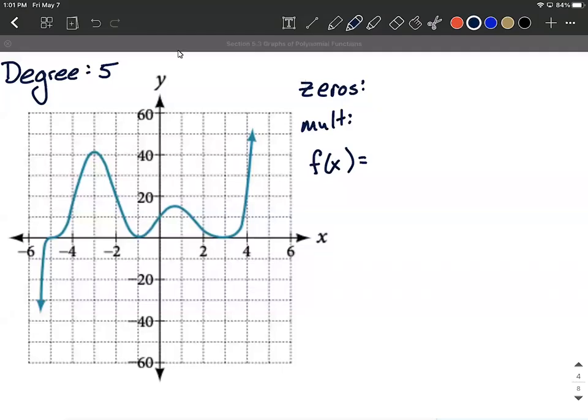Okay, we're given the graph of a fifth degree polynomial and we are asked to find what actual function is going to produce this graph. All right, so let's jump right in.